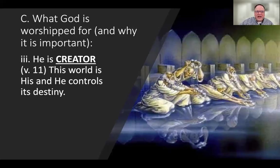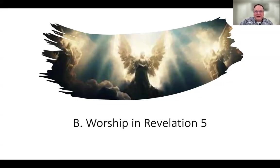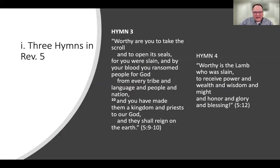All of creation, the world we live in — planet Earth is his and he controls the destiny. Things are not running out of control. He's not sitting in heaven stressing about how things will play out. Moving into chapter 5, we see incredible truth about Jesus. If you miss the Jesus of Revelation, you've missed the point of Revelation. In chapter 5 we see the worship of Jesus in heaven, and that tells us a lot about who he is.